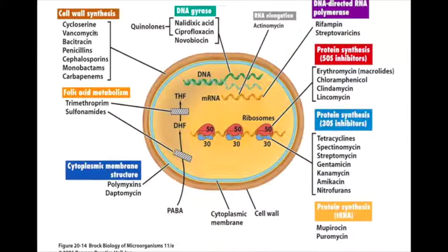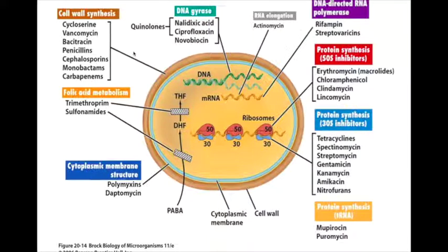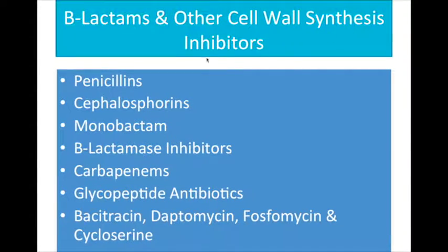The cell wall synthesis inhibitors include cycloserine, vancomycin, bacitracin, penicillins, cephalosporins, monobactams, and carbapenems.